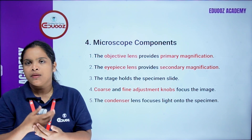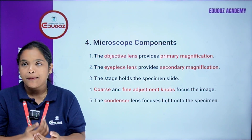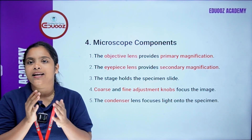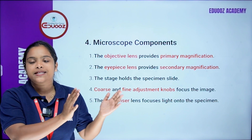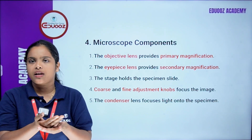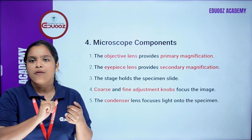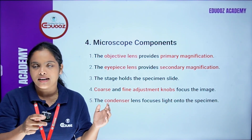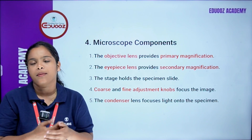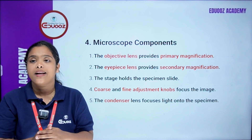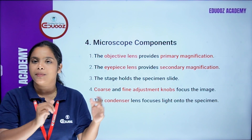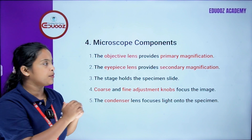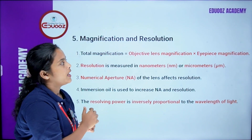Microscope components: The objective lens provides primary magnification. The eyepiece lens provides secondary magnification. The stage holds the specimen slide. The coarse and fine adjustment knobs focus the image. The condenser lens focuses light on the specimen.